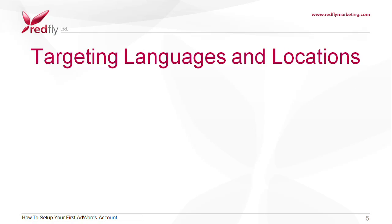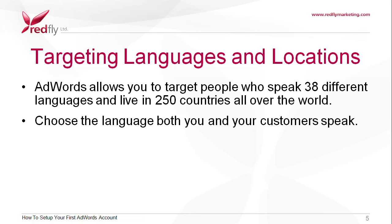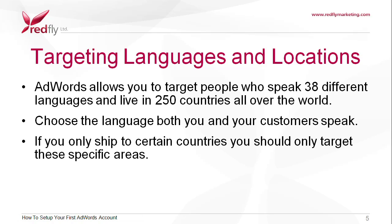Targeting languages and locations. AdWords allows you to target people who speak 38 different languages and live in 250 countries all over the world. However, you probably don't need all of them to see your ad. So you should choose the language both you and your customers speak. And if you only ship to certain countries, you should only target these specific areas. Otherwise, you could end up targeting users that can't even buy your product.